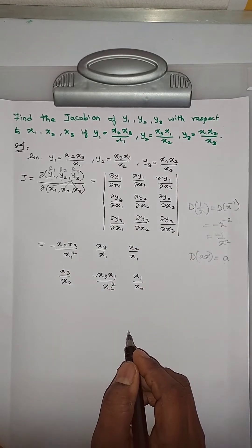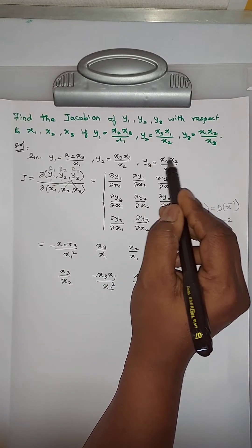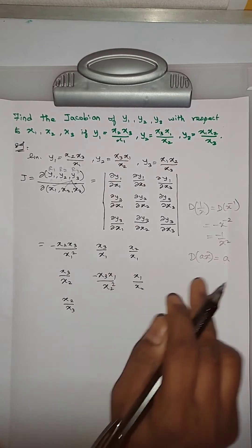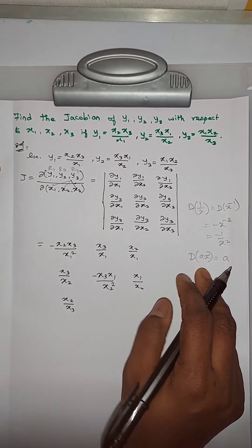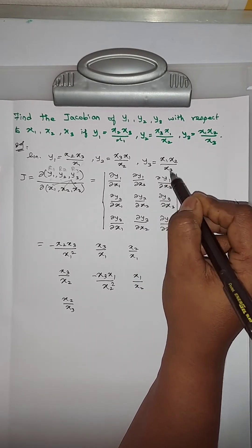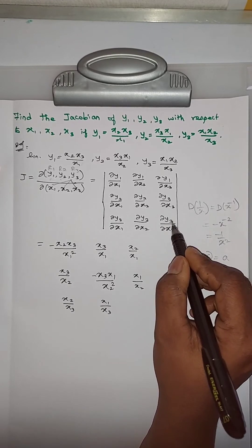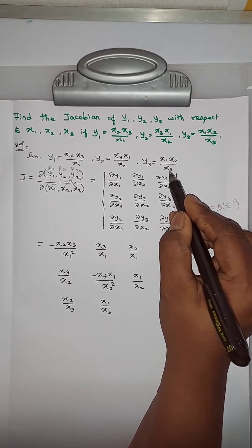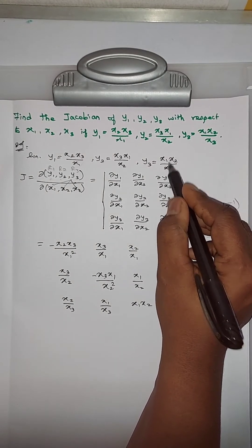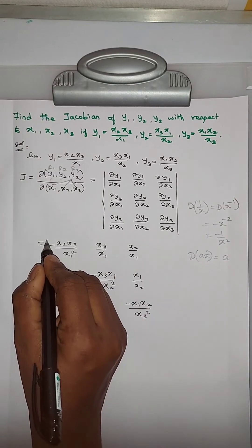Moving to the third row: differentiating y3 = x1·x2/x3 partially with respect to x1 gives x2/x3. Differentiating with respect to x2 gives x1/x3. Differentiating with respect to x3, x1 and x2 are constant, and 1/x3 differentiates to -1/x3², giving -x1·x2/x3². The determinant is now complete.